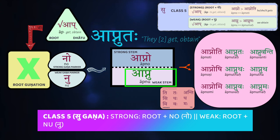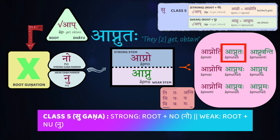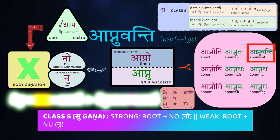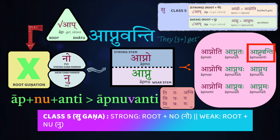All other forms in the parasmaipada and all of the ātmanepada use the weak stem āp-nu. The dual is āp-nu-taḥa (the two of them obtain). For the plural, it's āp-nu-vanti (they three or more get/obtain/receive). Here, when we have our u before anti, instead of the u changing into a va, the semi-vowel va is not going to get inserted in between.